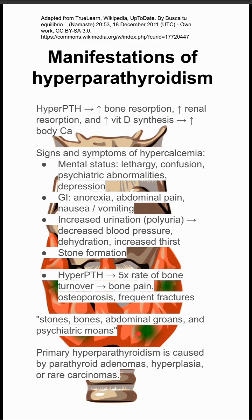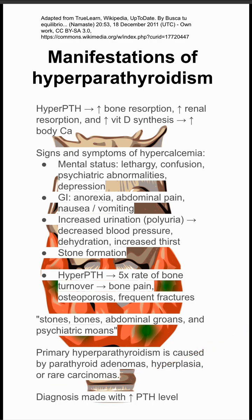Primary hyperparathyroidism is caused by three big categories of things: parathyroid adenoma, hyperplasia of the parathyroid glands, and in more rare cases, carcinomas. The diagnosis is made with an elevated parathyroid hormone level.